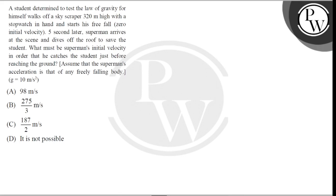According to the question, this is our ground and this is 320 meter high skyscraper. This person has 5 seconds here. The displacement s is equal to 0 plus 1 by 2 acceleration g into 5 square.